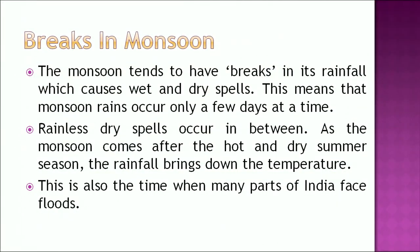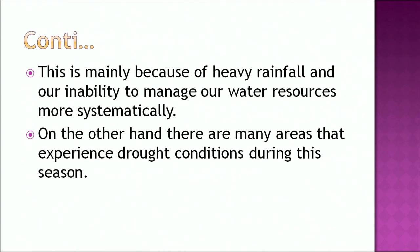The monsoon tends to have breaks in its rainfall, causing wet and dry spells — monsoon rains occur only a few days at a time with rainless dry spells in between. As the monsoon comes after the hot and dry summer season, the rainfall brings down the temperature. This is also the time when many parts of India face floods due to heavy rainfall and inability to manage water resources systematically. On the other hand, many areas experience drought conditions during this season.